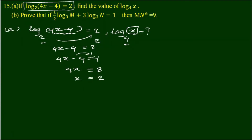Then 4x minus 4 is equal to 2, minus 4 is equal to minus 4 plus 4, so it is equal to minus 4. And minus 4 is equal to minus 4. Okay.